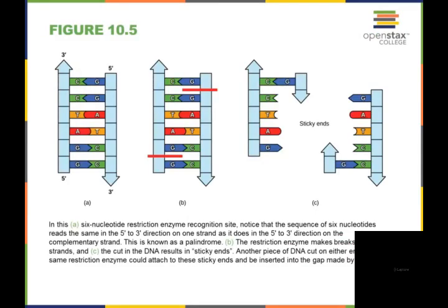One of the things we can use is enzymes to cut the DNA in different places. These are going to be called restriction enzymes. Here we show a 6-nucleotide restriction enzyme recognition site. What's going to happen is you've got a sequence of 6 nucleotides that reads the same in both the 5' to 3' direction.